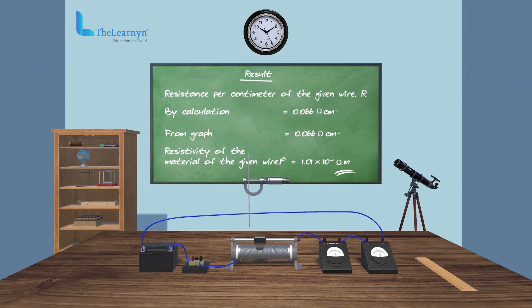Resistance per centimeter of the given wire is 0.0066 ohms per centimeter and resistivity of the material of the given wire is 1.01 into 10 to the power of minus 6 ohms meter.